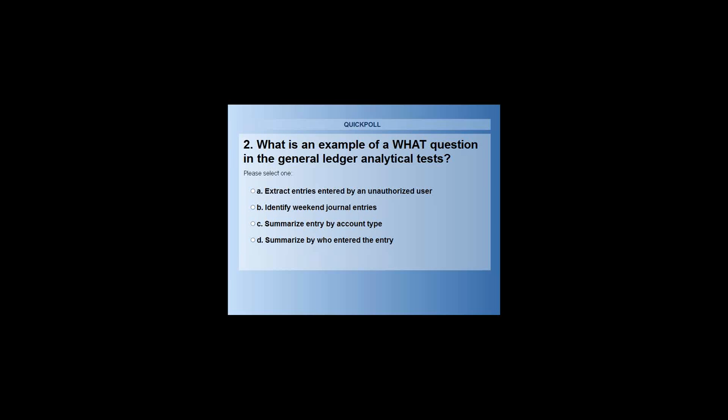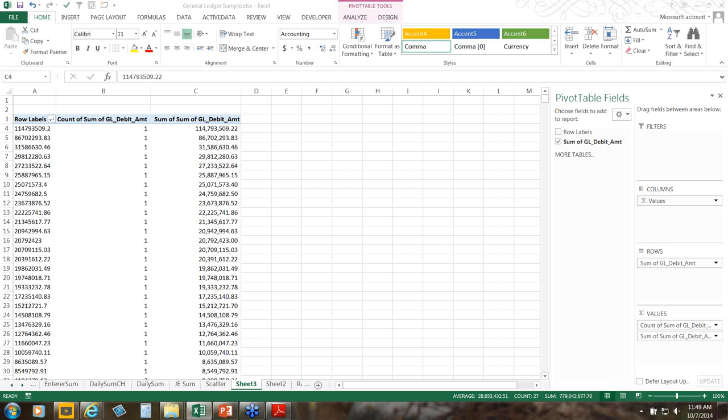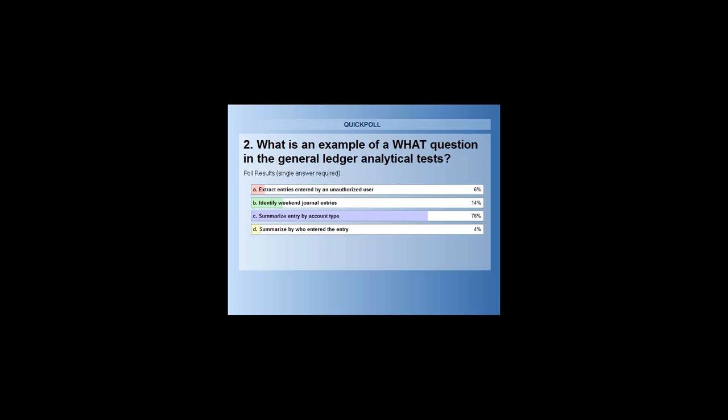93% of you voted. Summarizing the entry by account type was the correct answer. Extracting by who entered it and the unauthorized user — those are WHO questions. The weekend journal entry would be more of a WHEN question. Let me hide that and we'll get back into the analytics.